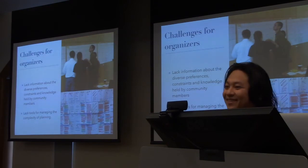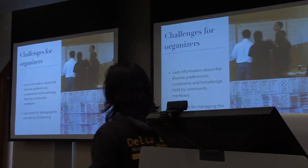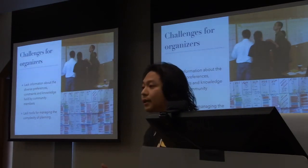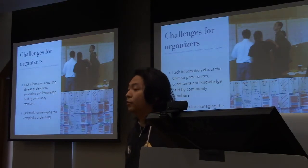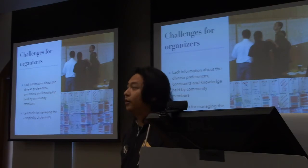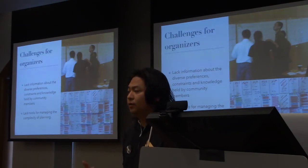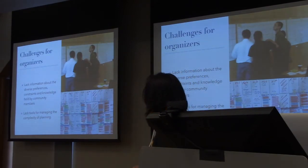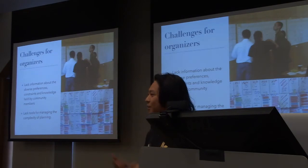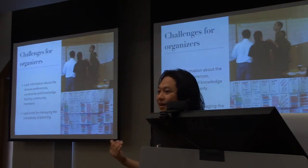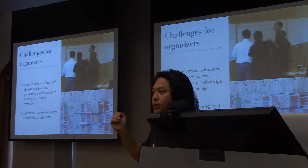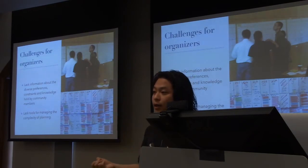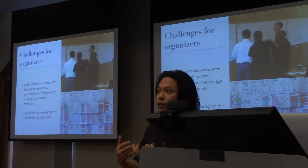The organizers face some clear challenges. One is that they really lack information about the diverse preferences, constraints, and knowledge held by community members. CHI has grown to about 3,000 to 3,500 attendees every year, with 500 accepted papers and 200 sessions. There's no single person who knows about all the content and themes at CHI. Even with a handful of people in the room, the schedules they put together depend on the knowledge they have, but often miss what other people want and certain groupings that only other people know about.